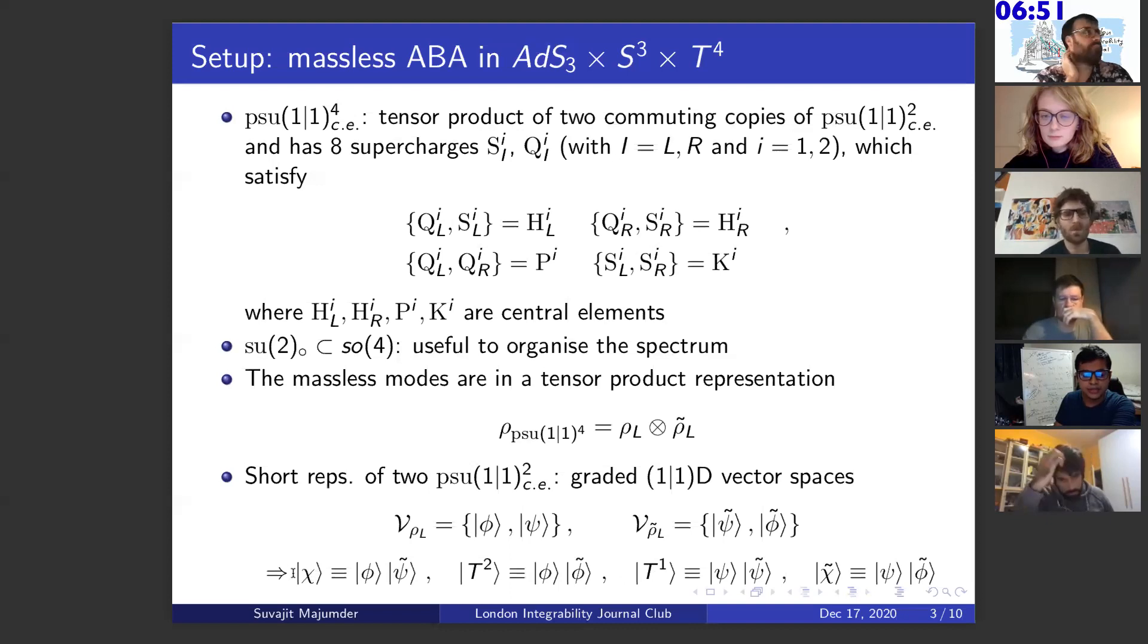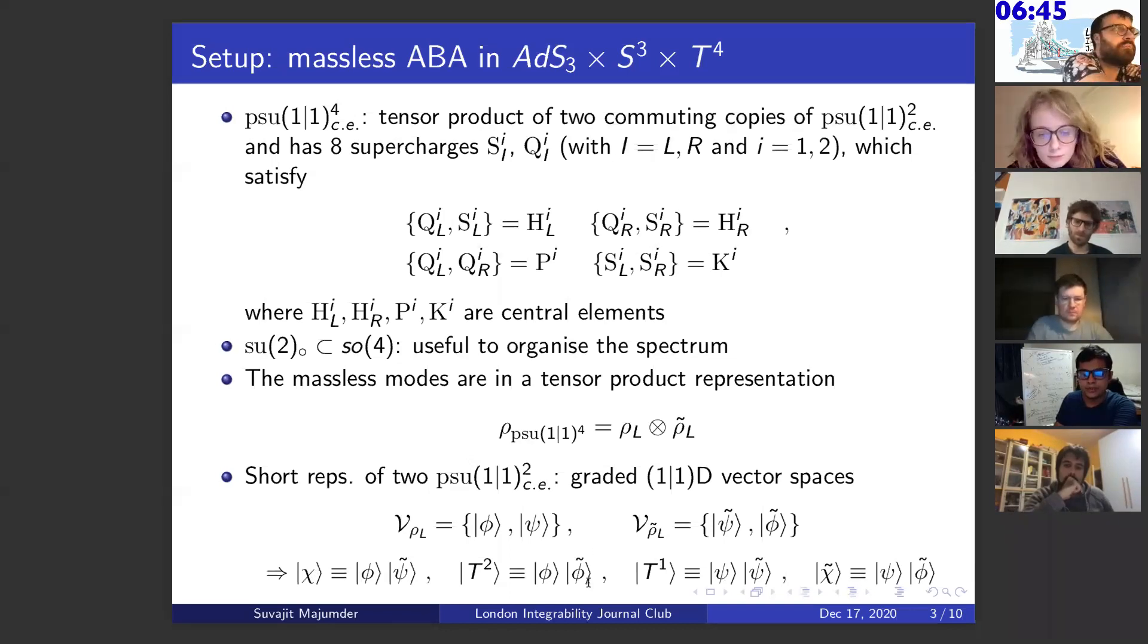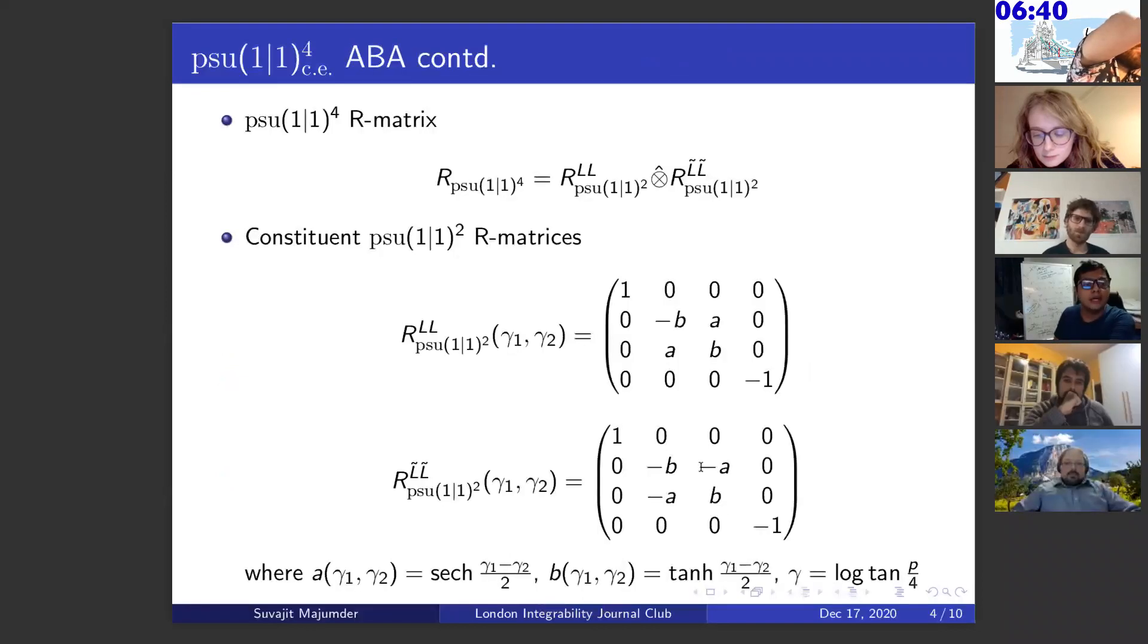This is our representation, tensoring these two vector spaces is the basis. Chi is a fermion. The highest weight state will be a fermion, one side highest weight state, and the lowest weight state is also fermion, and the middle ones are bosons.